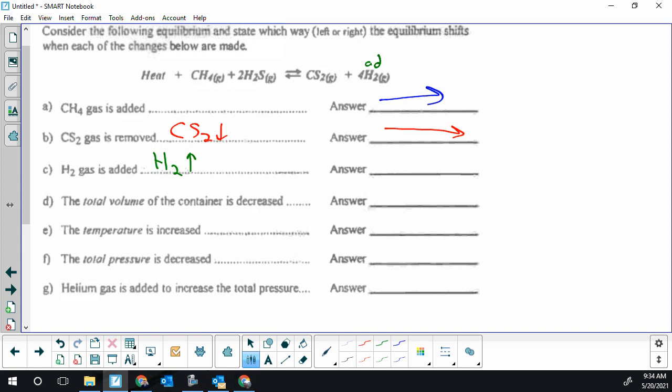Moving on to c, hydrogen gas is added. When hydrogen gas is added, the system is going to want to shift to try to do the opposite, which is to remove it. In order to remove or use up a product, the equilibrium needs to shift in the reverse direction. That will cause our two products to go down and our three reactants including heat as reactant to go up.